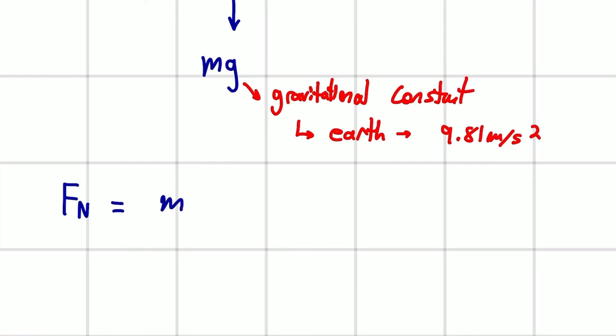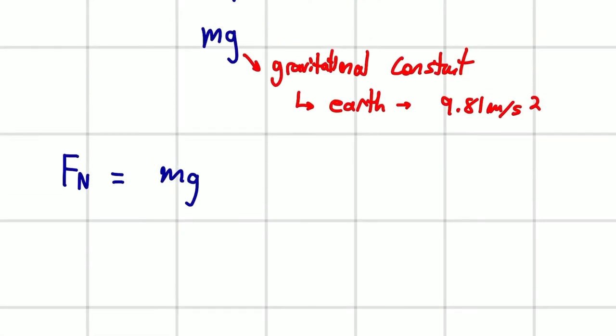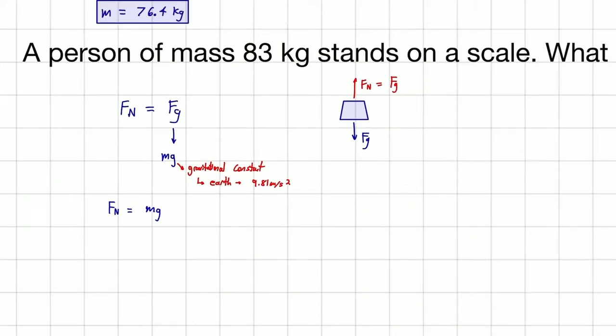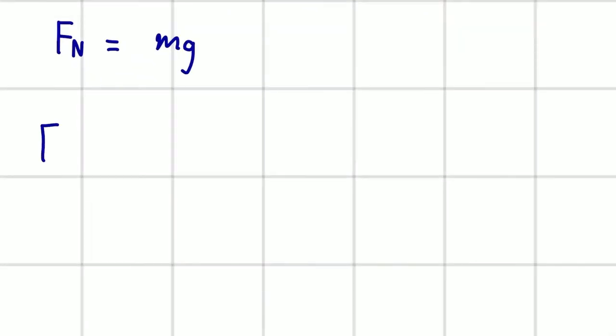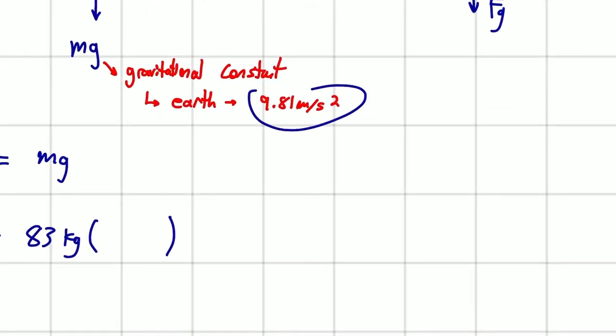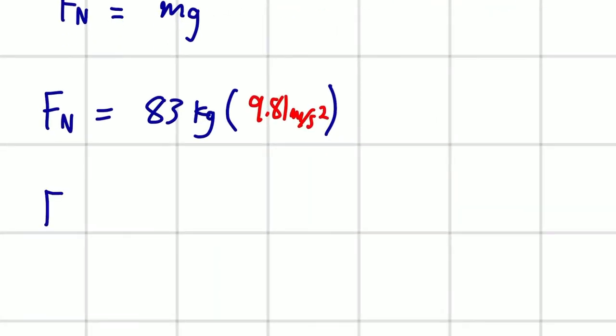So let's write this out here. Fn is equal to Mg. And guess what? We have value for M, and we know the value of G. So this is a problem we can solve. M is just 83 kilograms. So Fn is equal to 83 kilograms multiplied by G. Remember, our G is 9.81 meters per second squared.